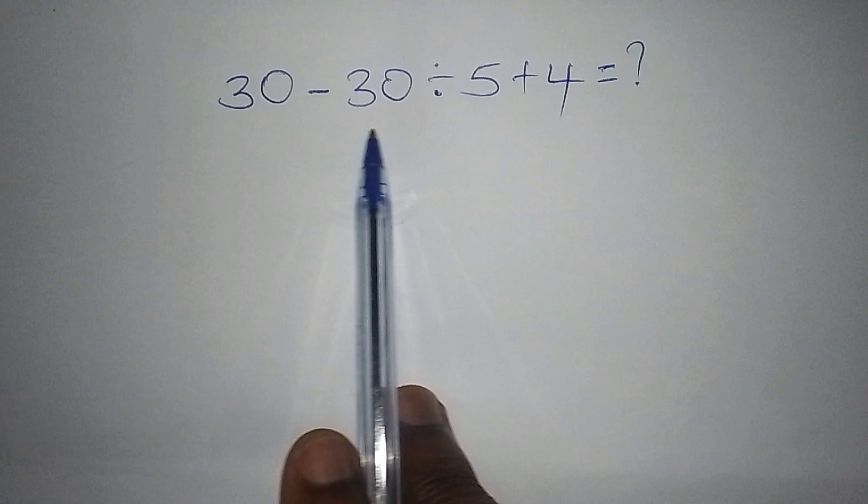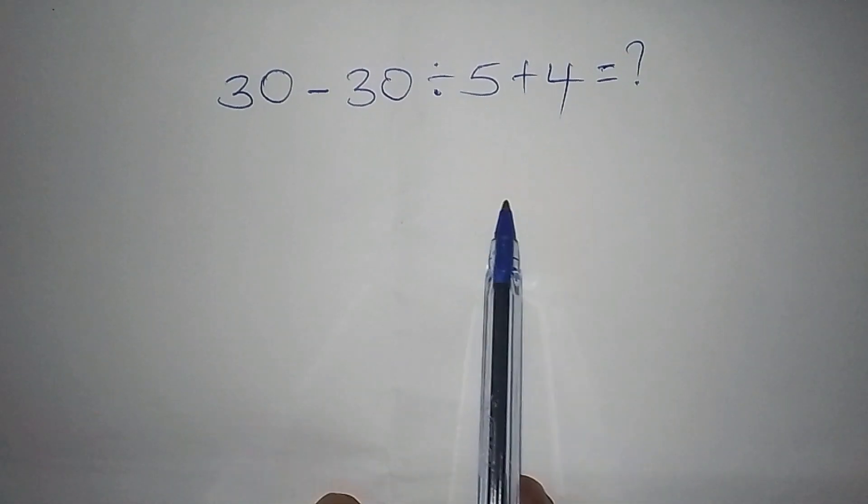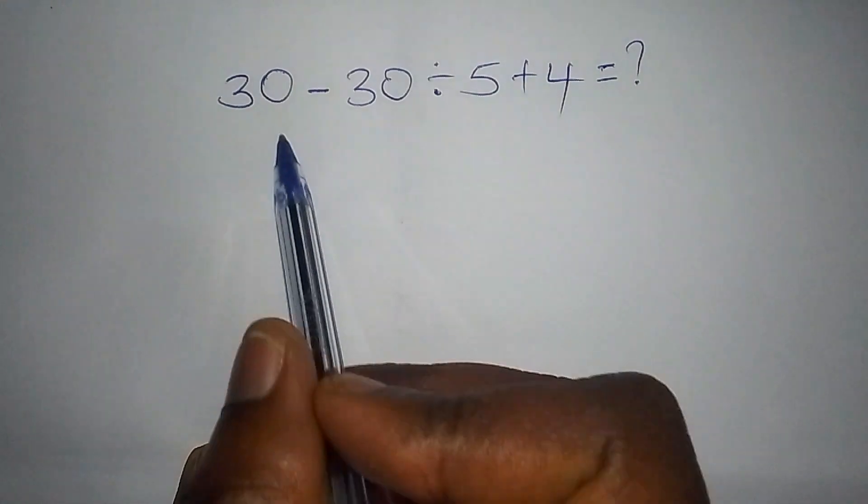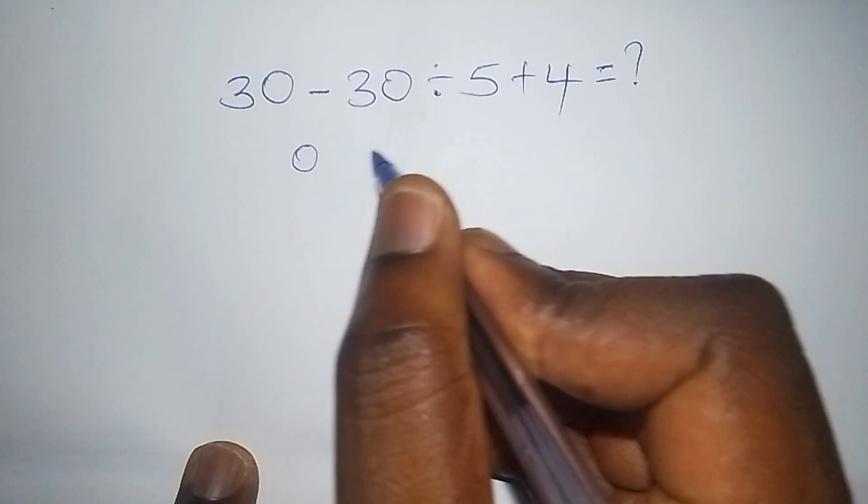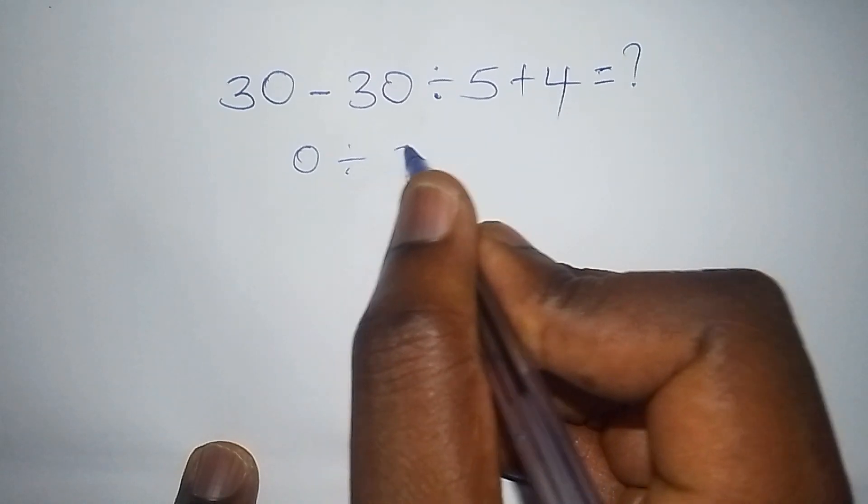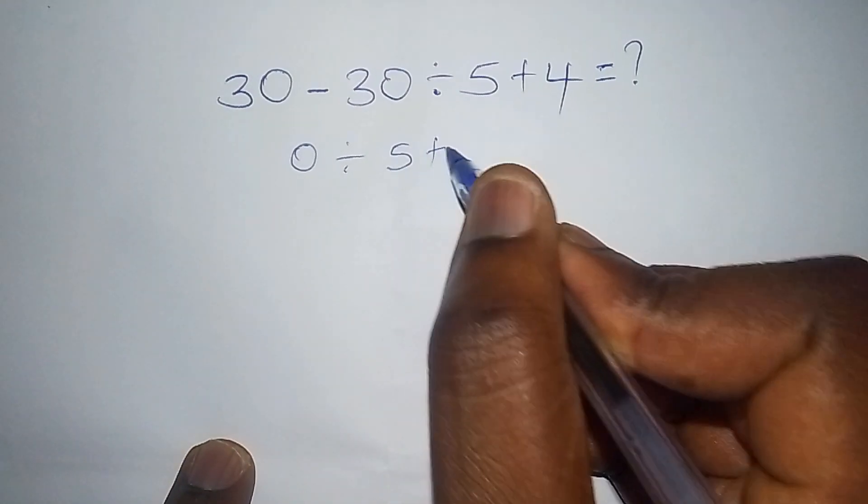Now, there are some mistakes that someone can make when working it out, so I want to reveal some of those mistakes. Assume now you pick 30 minus 30, then you say this one is 0, then from there you divide by 5, so after dividing by 5, you add 4.